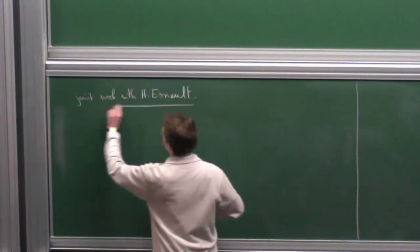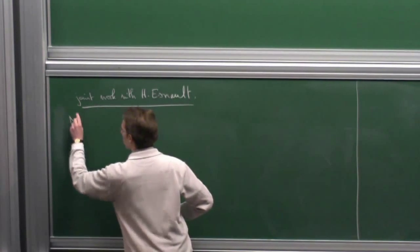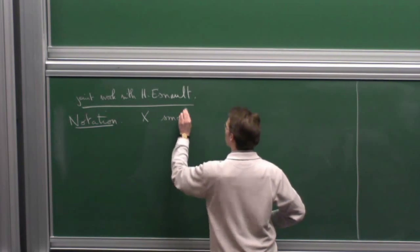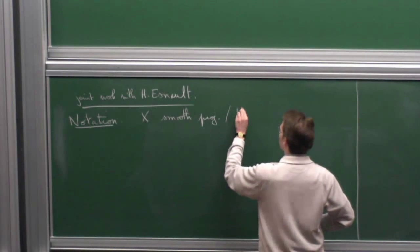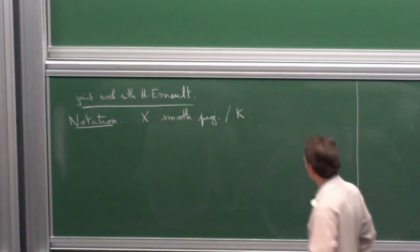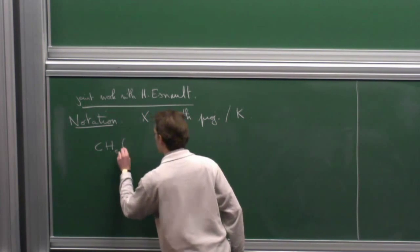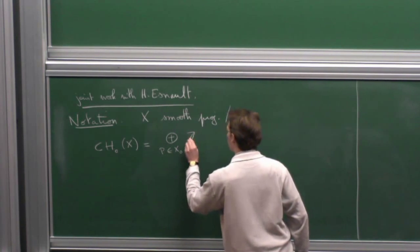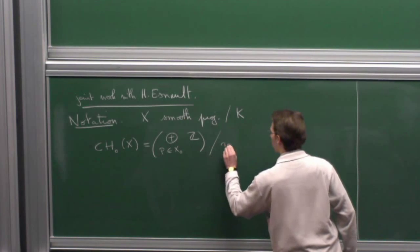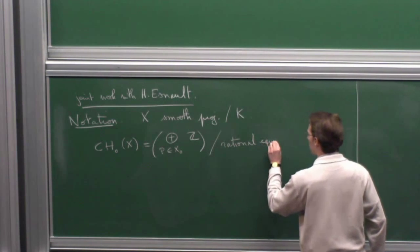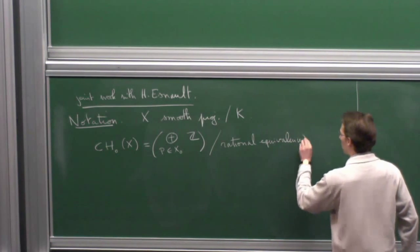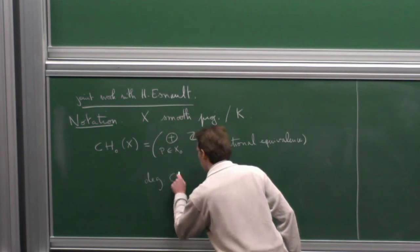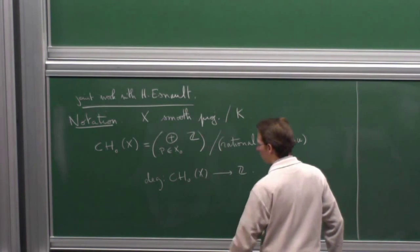Let me start by setting up some notation for the whole talk. Capital X will be a smooth projective variety over field K. I will denote the Chow group of zero cycles by CH_0 of X. This is the group of cycles — the free group on the closed points — modulo rational equivalence. Rational equivalence is generated by linear equivalence on the curves lying on X. Because X is projective, there is a degree map, and I will denote the kernel by A_0 of X.